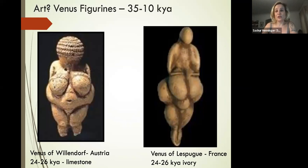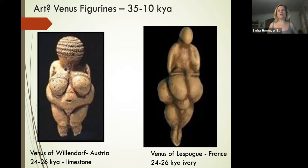These are classically known as Venus figurines. The most classic one—the Venus of Willendorf—is an Austrian example made out of limestone. On the right we have the Venus of Les Puig from France, both about 24 to 26,000 years old.